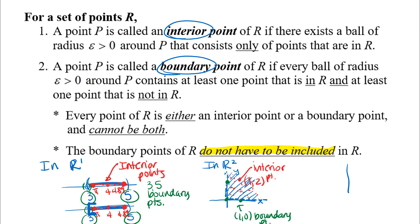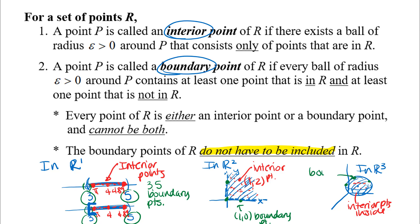In R3, let's think about a sphere of radius 1 around some point, including all the points on and inside the sphere. All the interior points would be the points inside the sphere, and the boundary points would be the points on the outer surface of the sphere. Notice that since we're including the entire sphere, all of those boundary points are included in that region — but remember, boundary points may or may not be included in a region.